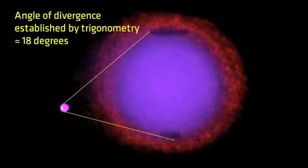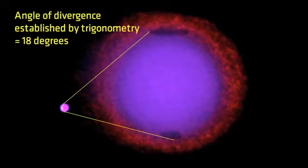The red targeting ring helps you understand how the distance from the target affects the size of the beam. As you can see, the laser beam, which is shown in blue, is contained just inside the red targeting ring.